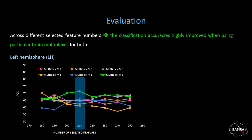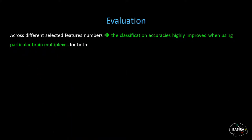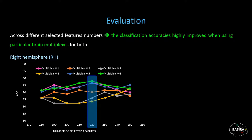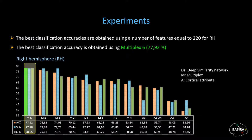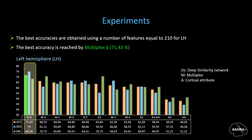Across different selected feature numbers, the classification accuracy is highly improved when using particular brain multiplexes for both the left and right hemispheres. Specifically, multiplex M6 achieved the best accuracy among all architectural networks, with classification accuracy peaking at 77% for the right hemisphere and 71% for the left hemisphere. This shows that the proposed similarity networks allow better discrimination between late MCI and AD subjects.